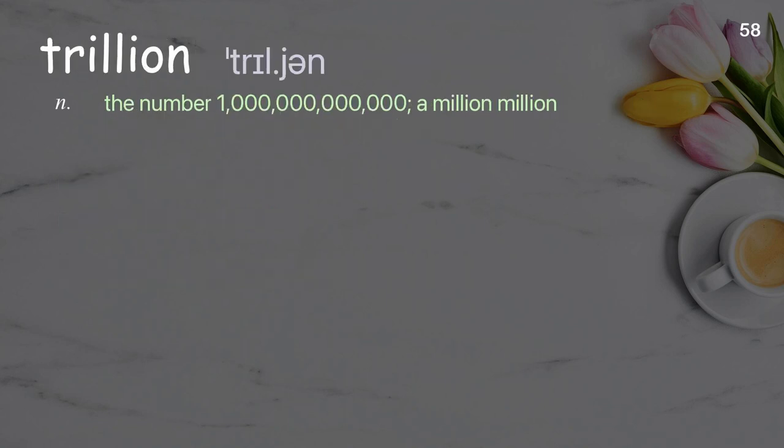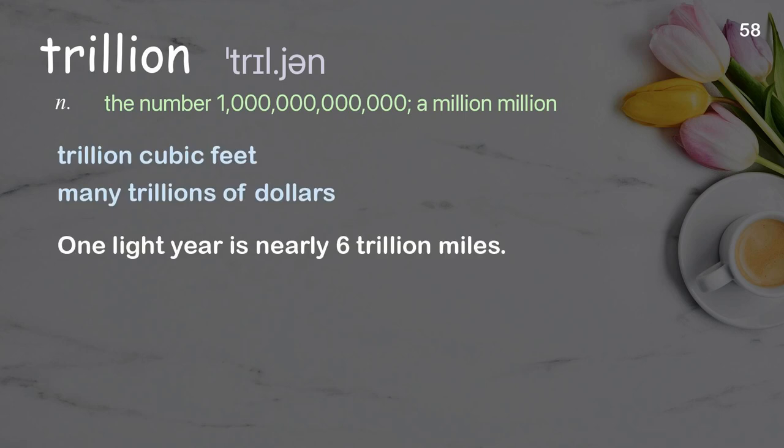Trillion: the number one trillion — a million million. Examples: trillion cubic feet, many trillions of dollars. One light year is nearly six trillion miles.